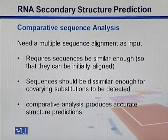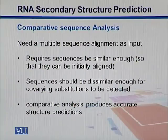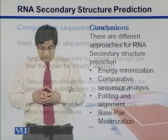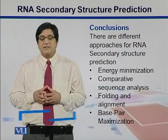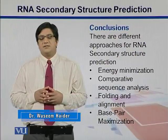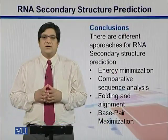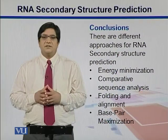In comparative sequence analysis, we do a multiple sequence alignment as input, and it requires sequences to be similar enough so that they can be aligned with one another. The sequences should also be dissimilar enough for co-varying substitutions to be detected. If we have dissimilarities, we can look into where co-variations occur. This approach produces structure predictions. In summary, energy minimization looks for a structure with the lowest energy, which is the most stable and therefore most likely structure.